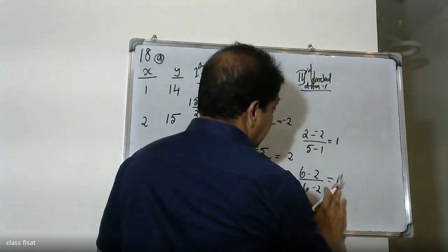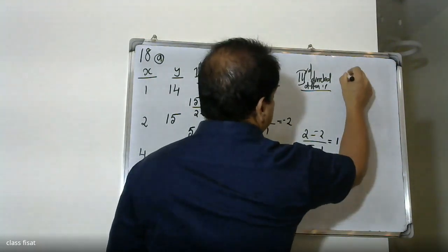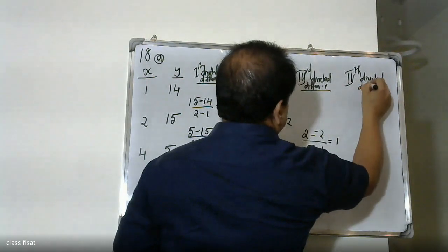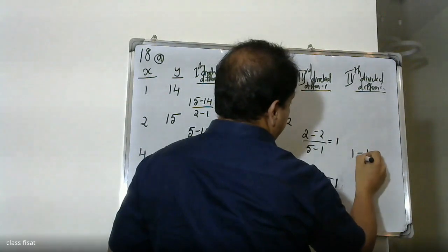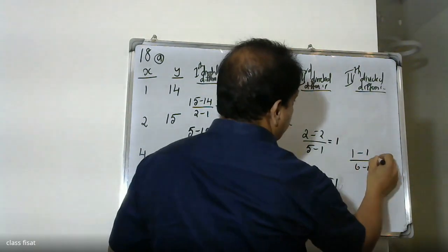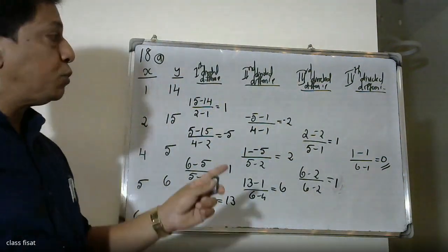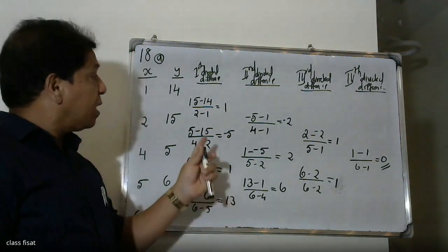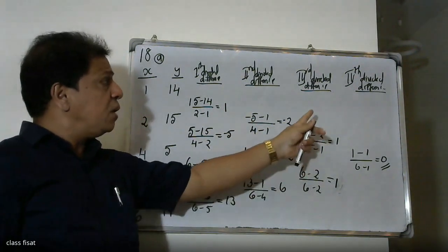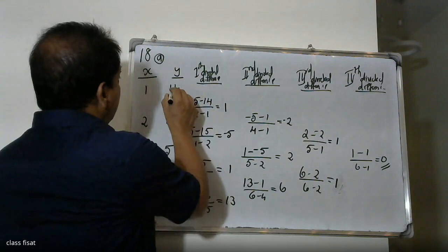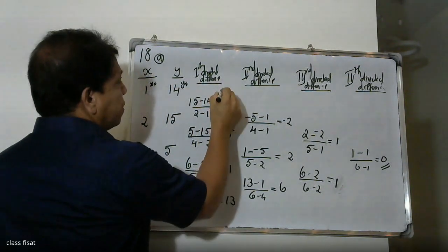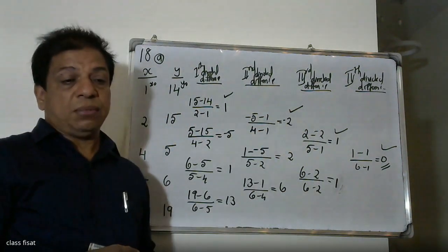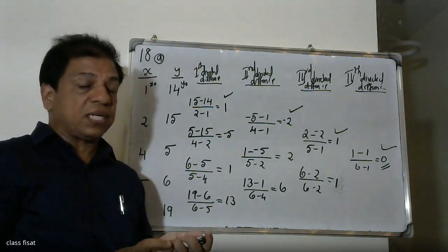Therefore, we have the fourth divided difference. The table form shows that we have the values of the 1st divided difference, 2nd divided difference, 3rd divided difference, and 4th divided difference. We have the value of 1st divided difference, 2nd divided difference, 3rd divided difference, 4th divided difference. We substitute the 4 values and we have the answer from this formula.